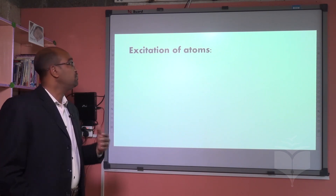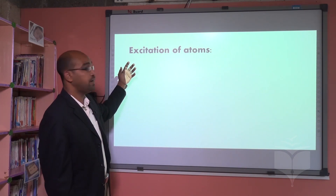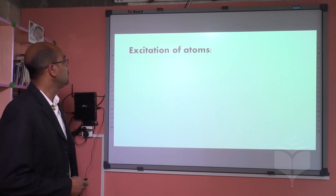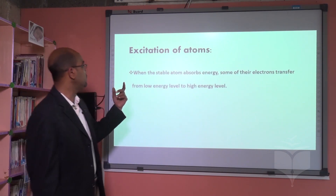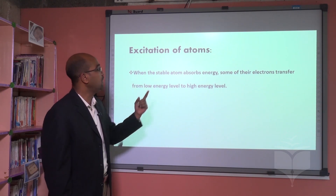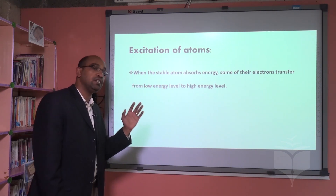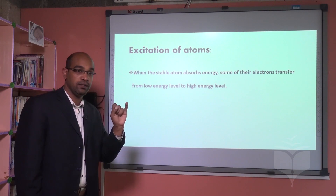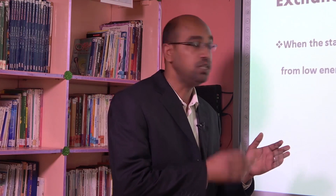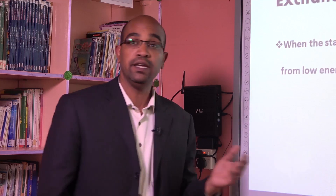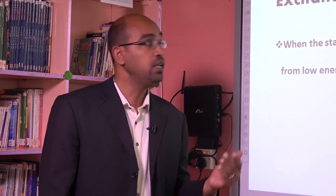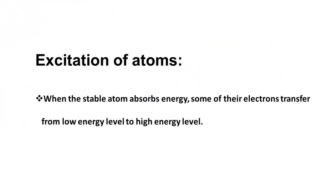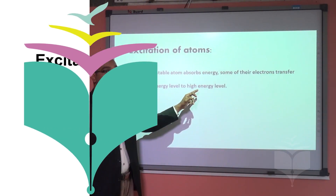To understand excitation properly, we will define it in several points. Point one: when a stable atom absorbs energy — whether by electronic shock, high kinetic energy, heating, or radiation — some of its electrons transfer from a lower energy level to a higher energy level.